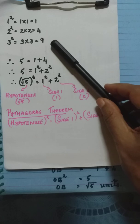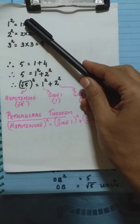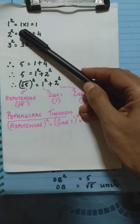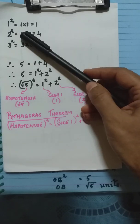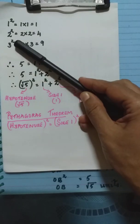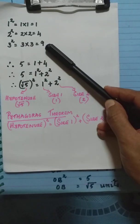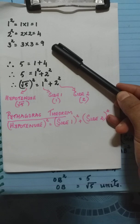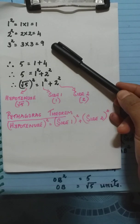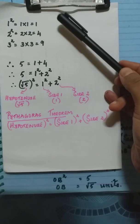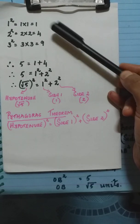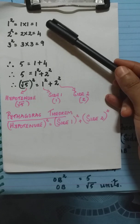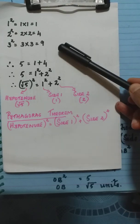I have written the squares of 1, 2 and 3. When we have to find the square of a number, we multiply the number by itself: 1 square is 1, 2 square is 4, 3 square is 9. We have to find the square root of 5 and the square root of 10. We know that 1 plus 4 is 5 and 1 plus 9 is 10, so using these three squares we will represent root 5 and root 10 on the number line.